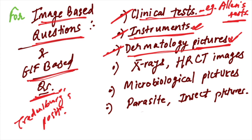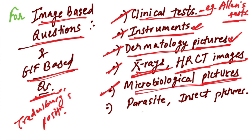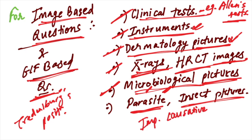For X-rays, especially HRCT images, focus on respiratory questions — COPD changes, TB changes — and nowadays some COVID-related questions may appear as well. For microbiological pictures, you should be able to identify bacteria under different stains, parasite images, and insect images in PSM. They won't directly ask what an agent causes; they will give you a clinical question alongside the image and you need to identify the organism and correlate it.